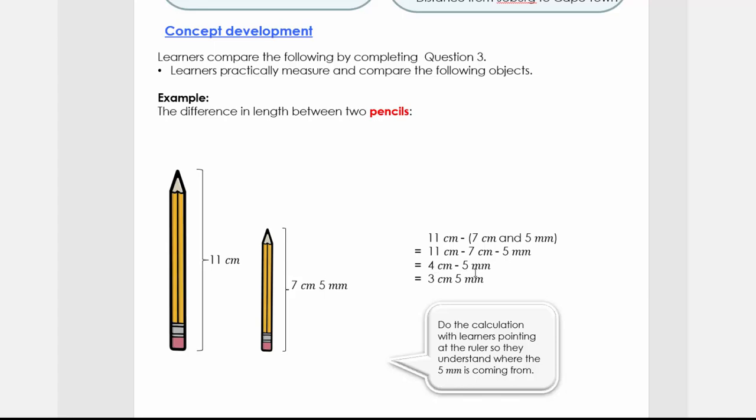When I subtract the 5 millimeters, it gives me 3 centimeters and 5 millimeters. If the learners struggle with this concept, do it on a ruler so they can see how we got from 4 centimeters minus 5 millimeters equals 3 centimeters and 5 millimeters. Do the calculation with learners pointing at the ruler so they understand where the 5 millimeters is coming from.